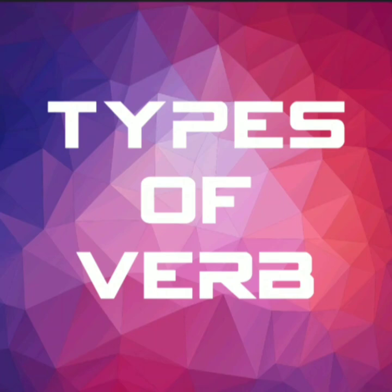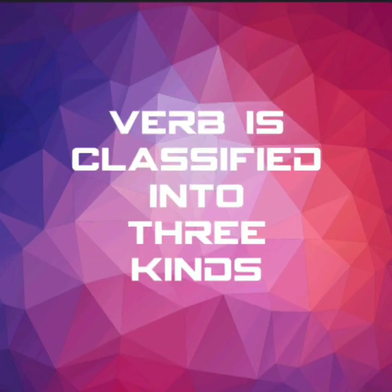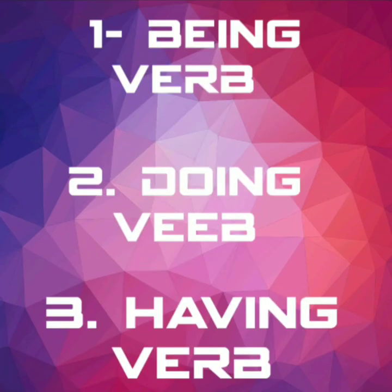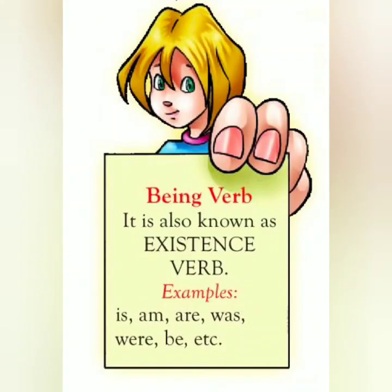Moving ahead, we are going to discuss the types of verb. Verb is classified into three kinds: being verb, doing verb, and having verb. Being verb is also known as existence verb. It denotes the existence done by the subject of a sentence.